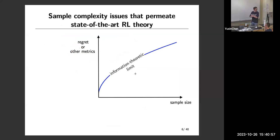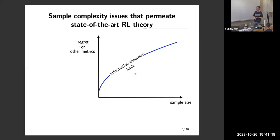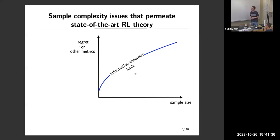Sample complexity is going to be the main focus today. I was working on information theory during the first several years of my PhD. If you are an information theorist, natural questions are: first, what are the fundamental limits? And second, whether there's any algorithm that can help you achieve it — and ideally an efficient algorithm. When I entered the reinforcement learning field, this became a natural question for me.